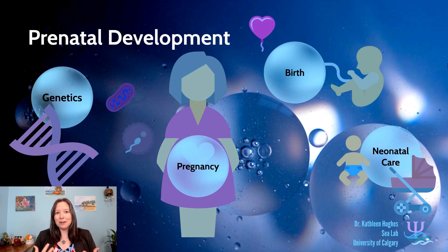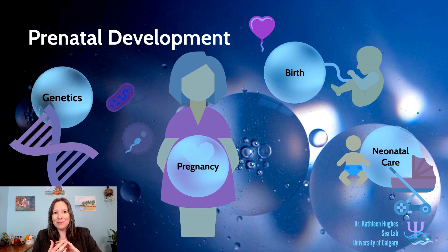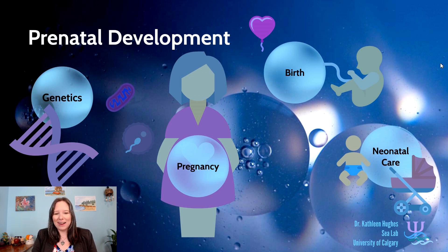We just covered genetic development and left off with a teaser of what's to come next, talking about monozygotic and dizygotic twins and how when the egg and sperm form together, they form a zygote — a little clue about what we're going to see in the next section on pregnancy.